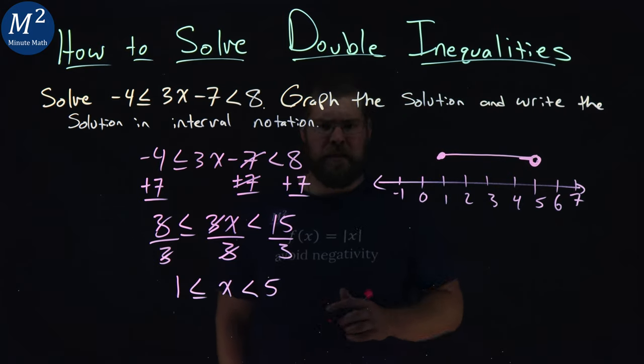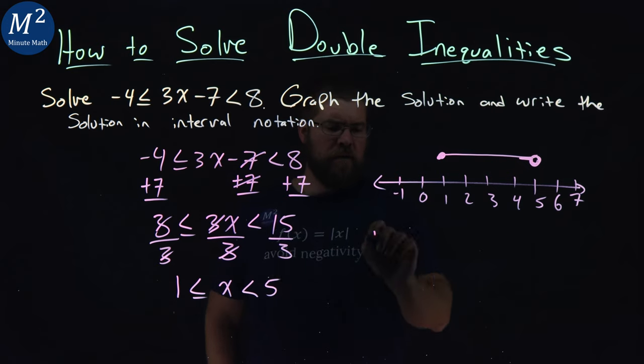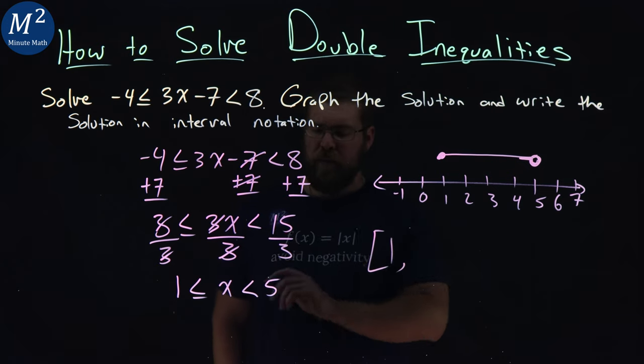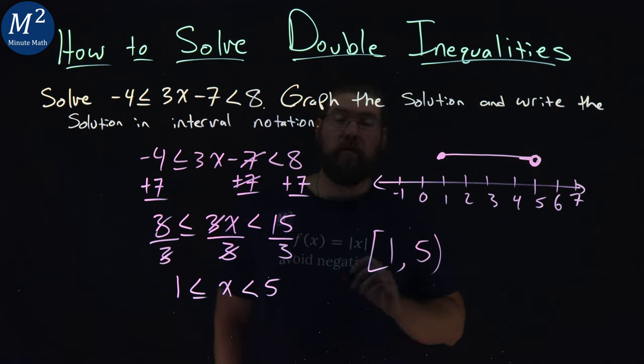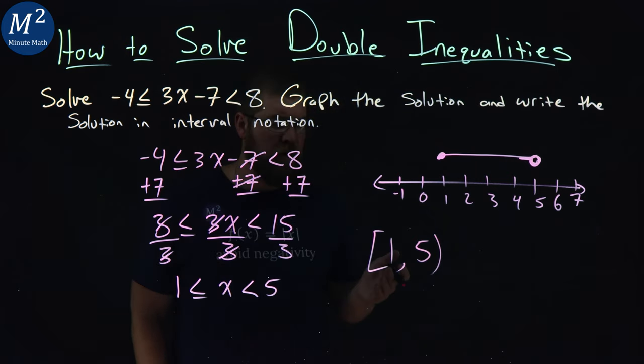Now interval notation, same idea. We have, we can equal one, so we put a bracket here for one, comma, and we go all the way to five, but we do not equal five, so we have a parenthesis. And there we have it.